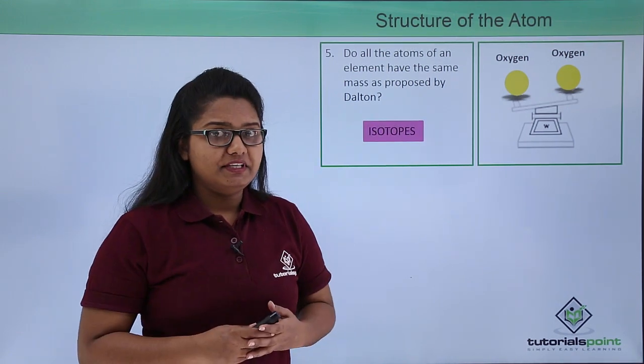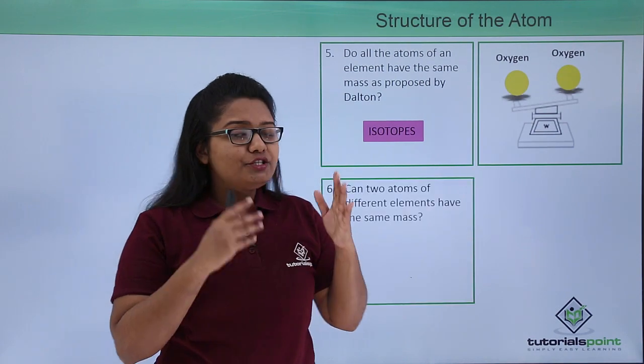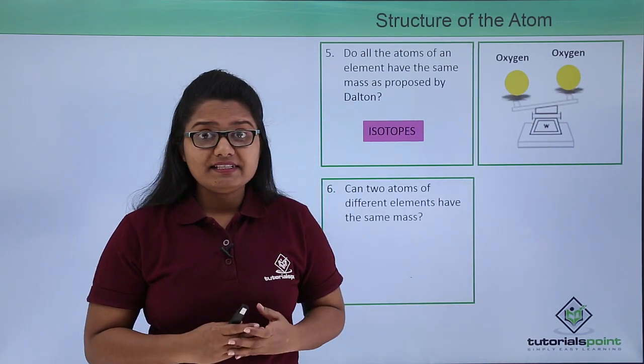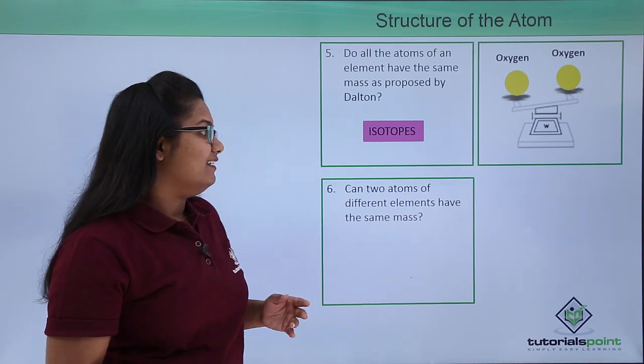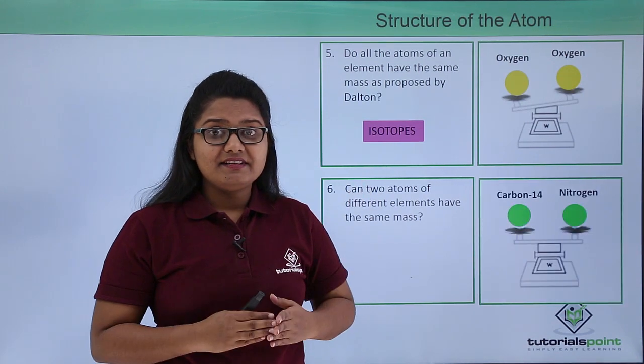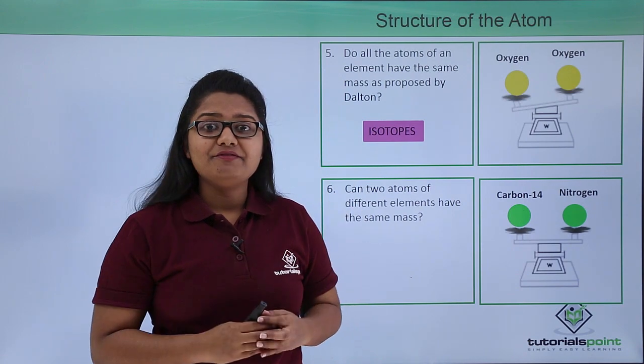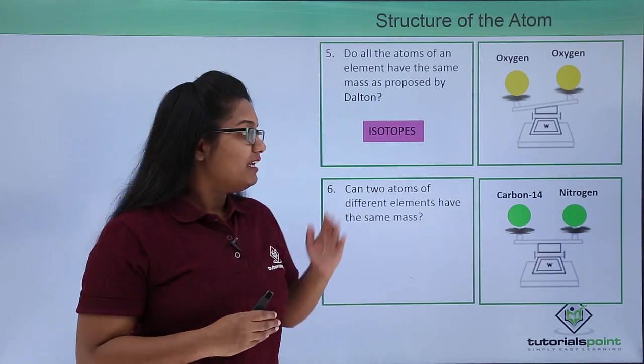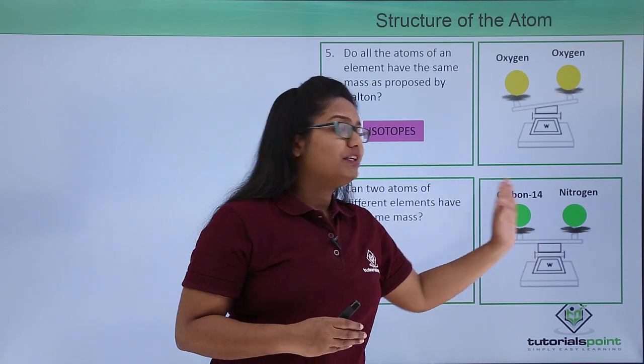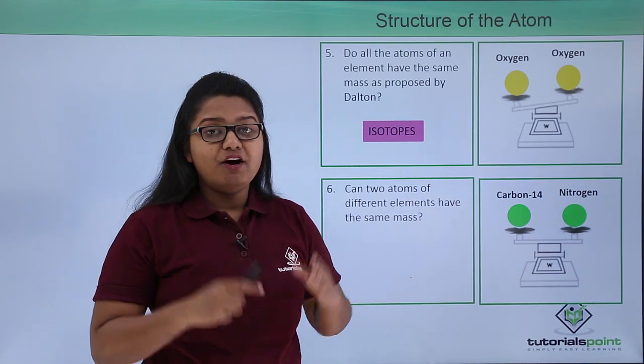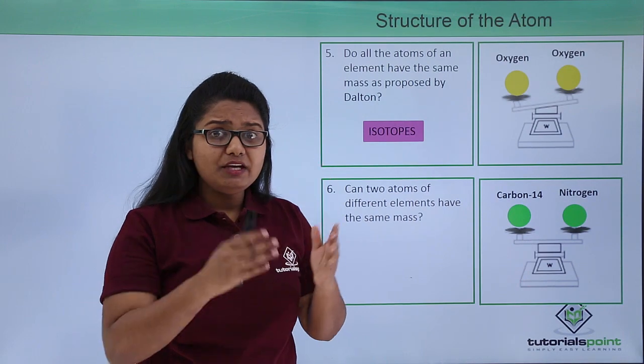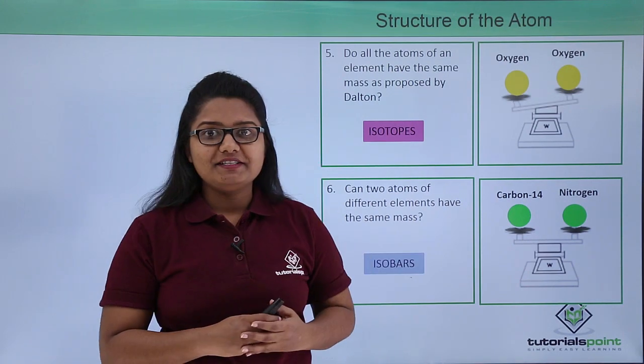Now there is another possibility: can two atoms of different elements have the exact equal mass? The answer is yes. There are certain elements whose atoms may have the exact mass even if they belong to different elements. Now these set of atoms of different elements with equal masses are termed isobars.